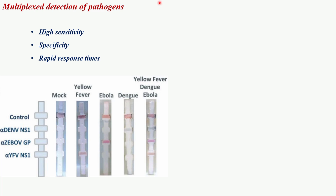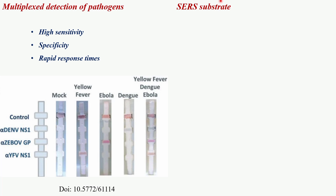Silver nanoparticles are widely used as substrates in surface-enhanced Raman spectroscopy (SERS) due to their unique optical properties and ability to significantly enhance the Raman scattering signal of adsorbed molecules. SERS is a powerful analytical technique that enhances the Raman scattering of molecules adsorbed on rough metal surfaces or nanostructures. This enhancement allows for the detection of very low concentrations of substances, making SERS a highly sensitive method for chemical and biological sensing.